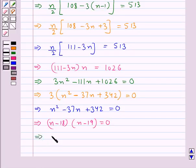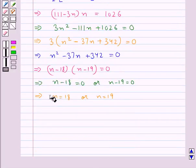So this means n - 18 equals 0 or n - 19 equals 0, which gives us n equals 18 or n equals 19. So this means the given AP has either 18 terms or 19 terms.